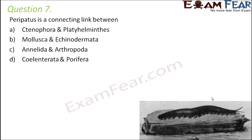Question number 7. Peripatus is a connecting link between: tenophora and platyhelminths; molluscs and echinodermata; annelida and arthropoda; or cilentrata and porifera. Peripatus is a living fossil — it looks like a caterpillar, as you see on the screen. It is a connecting link between the annelids and the arthropods, as it has annelid-like characters as well as arthropod-like characters.